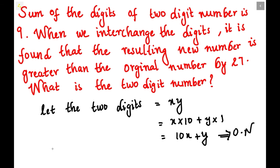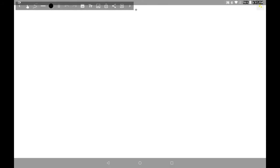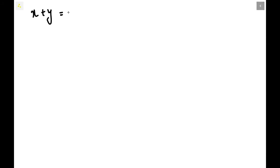They have also given us one condition: x plus y equals 9. From this equation let us find the value of y, which will be useful for further simplification. So y will be equal to 9 minus x. Let us keep this aside.